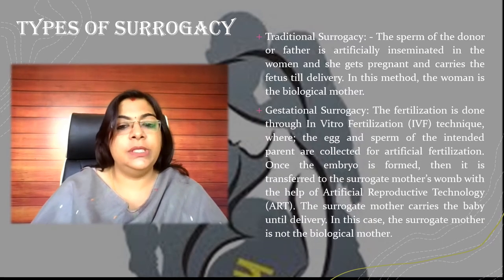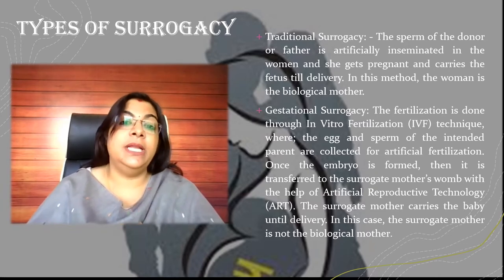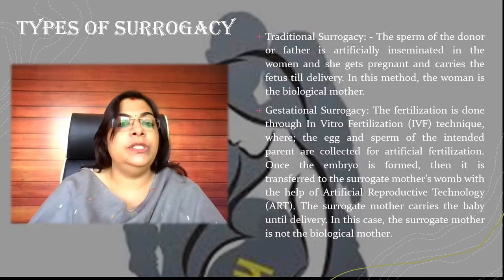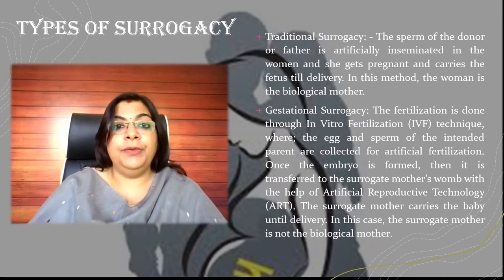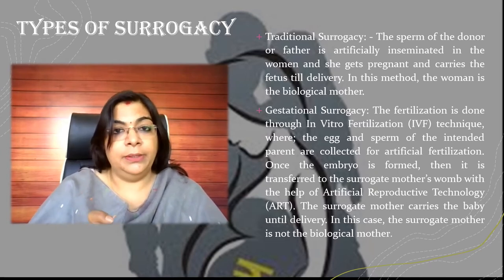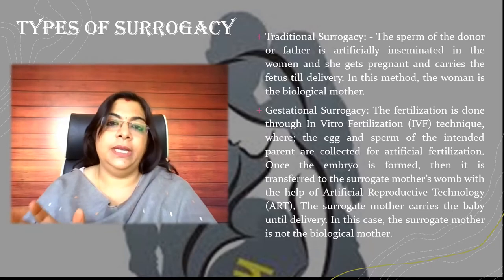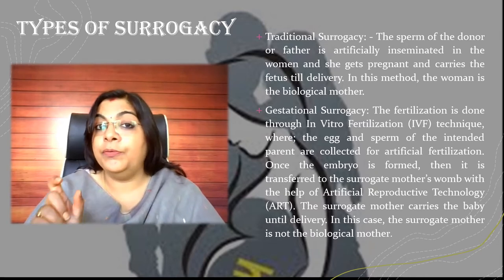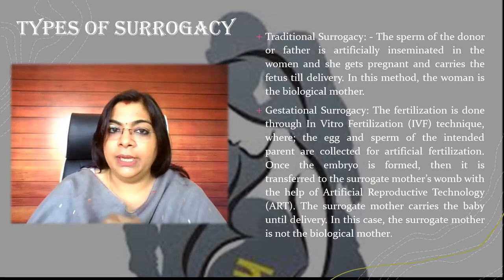The technique which is mostly used is gestational surrogacy. In this method, fertilization is done through the in vitro fertilization technique — IVF — which is most popular these days. This technique is for infertile couples where the sperm of the father and the egg of the mother are taken, artificially fertilized, and once the embryo is formed, it is transferred to the womb of the surrogate mother, who then delivers the child and gives it to the infertile couple.